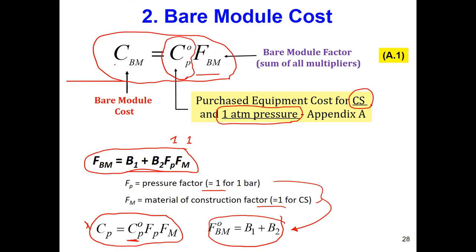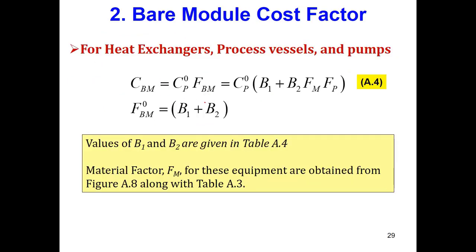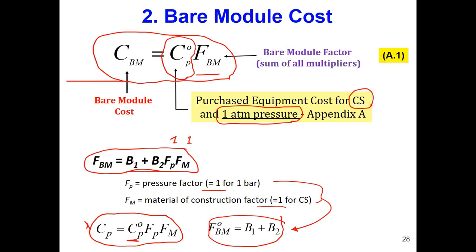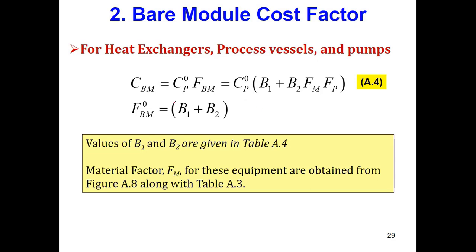The base equation states: the total cost of equipment at a certain pressure and material of construction equals the cost at one bar and carbon steel times the bare module factor. Substituting the FBM equation into this gives us the final working equation shown in the next slide. This is the equation we will mainly use throughout the rest of this unit.